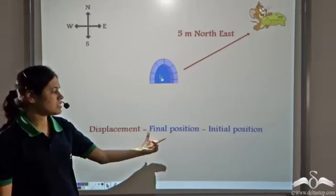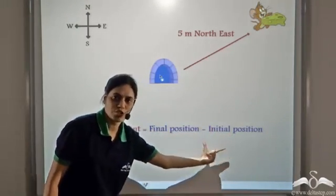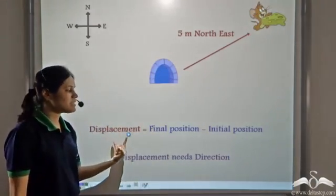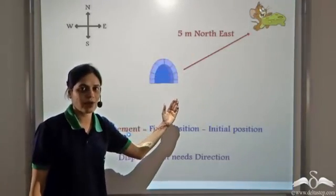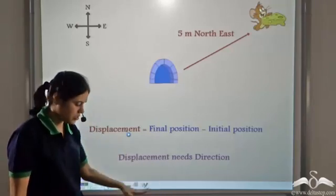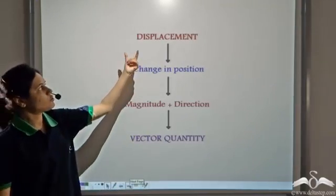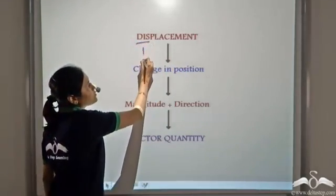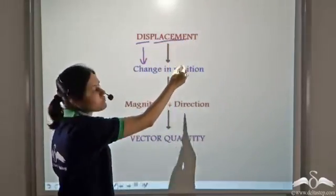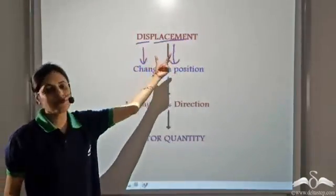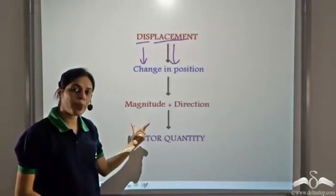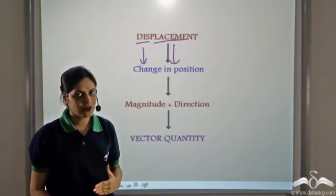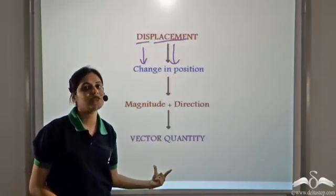Displacement is equal to final position minus initial position. As we have already seen, displacement needs direction. So displacement tells us how far a body is from its initial position and it requires direction. Displacement — as the name itself suggests — 'dis' stands for change and 'placement' stands for position. So displacement is a change in position. It requires both magnitude and direction and hence it is a vector quantity. So distance was a scalar quantity but displacement is a vector quantity.